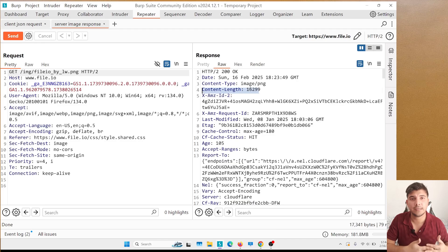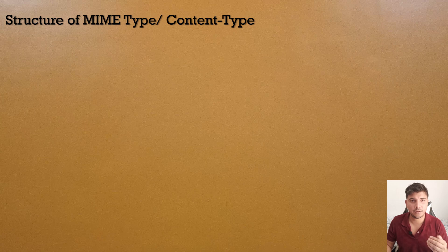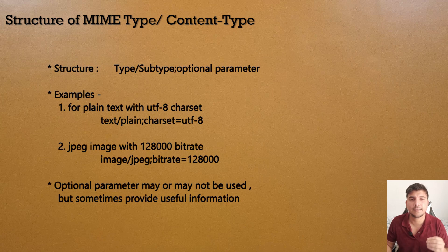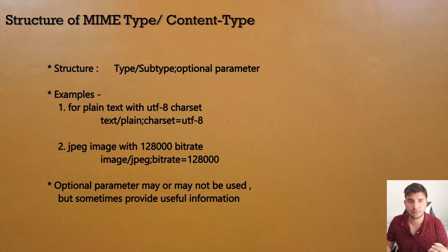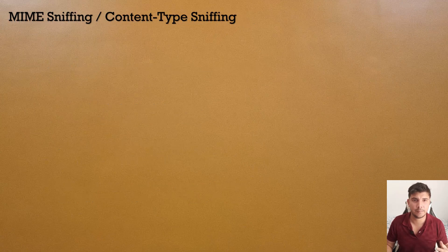So to summarize: Content-Type tells what type of data is being sent, and Content-Length tells the size in bytes. The structure of a MIME type or Content-Type is: type/subtype; optional parameter. The optional parameter may or may not be used — for example, for text type with subtype plain, someone might add charset=UTF-8 as the optional parameter.